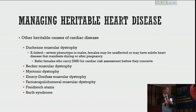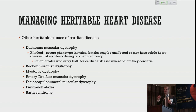Other heritable cardiac conditions include Becker muscular dystrophy, myotonic dystrophy, Emery-Dreifuss muscular dystrophy, facioscapulohumeral muscular dystrophy, Friedreich's ataxia, and Barth syndrome — all diseases with single gene mutations that can be passed on to a child.